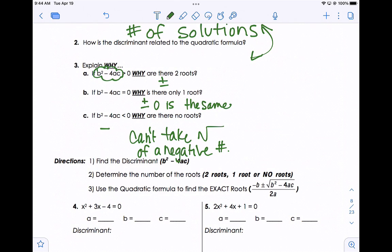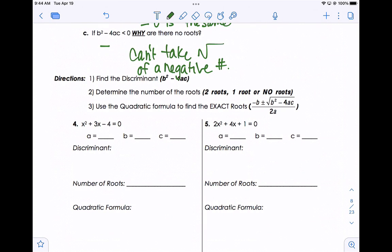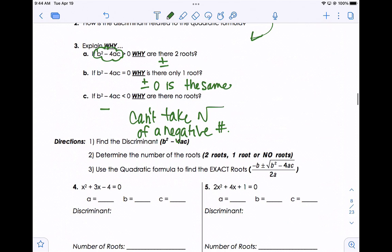So, your directions now are, find the discriminant, b squared minus 4ac. Determine, are there two real answers, one answer or no real solutions? And if there is a real solution, finish quadratic formula and get the answers. So that will be your assignment due tomorrow.